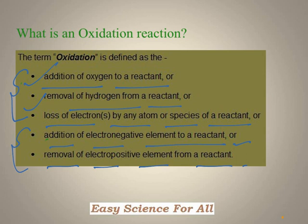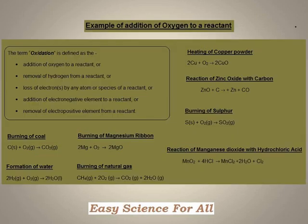Here are a few examples relating to the first criteria. In this first reaction of burning of coal, there are two reactants: carbon and oxygen. On reaction, oxygen is getting added to carbon. So it means that oxidation of carbon has taken place in this reaction. Or in other words, we can say that carbon has been oxidized in this reaction.